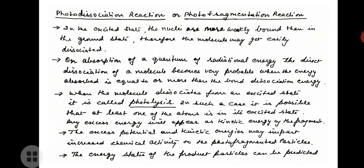In the excited state, the nuclei are more weakly bound than in the ground state; therefore the molecule may get easily dissociated on absorption of a quantum of radiation energy. Direct dissociation becomes very probable when the energy absorbed is equal to or more than the bond dissociation energy. When a molecule dissociates from an excited state, it is called photolysis. At least one of the atoms may be in its excited state, and any excess energy will appear as kinetic energy of the fragment.